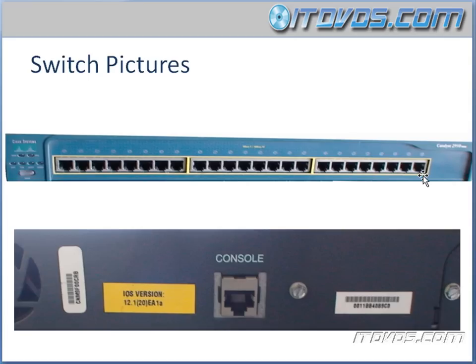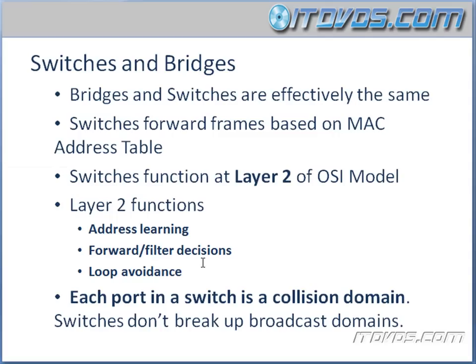Here's the back of the switch — you can see it just has a console connection. We're going to talk about console connections a little bit later, but it's basically how we can hook a laptop directly up to this switch, program it, and communicate with the Cisco IOS. Now, switches function at layer 2 of the OSI model — this is something we just have to burn into our brain, layer 2. There are some important layer 2 functions a switch performs: address learning, forwarding and filter decisions based on MAC addresses, and loop avoidance.